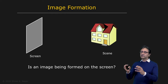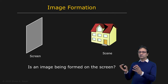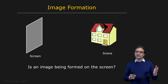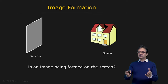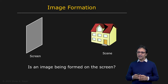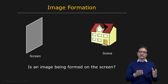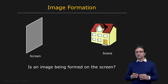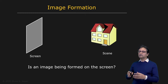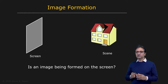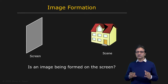Here you see a three-dimensional scene on the right, which is a house, and a screen — or let's call it an image plane — on the left. The question is: is an image of the house being formed on the screen? Well, if you consider any point on the screen, it does receive light from a lot of points on the house, but you don't see a clear image. One could argue that there is an image being formed, but it's a muddled image and not a clear one.